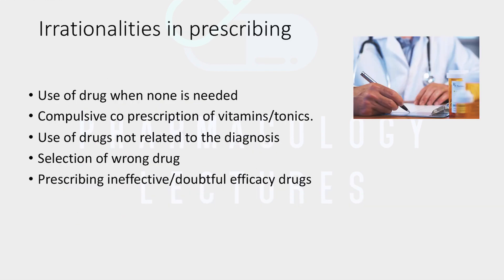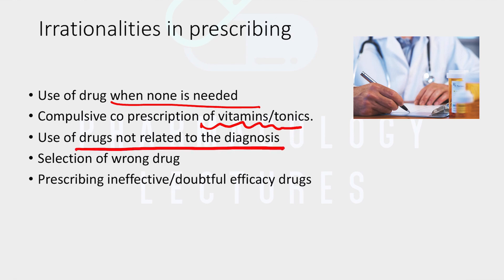Now, what are the irrationalities in prescriptions? Sometimes doctors prescribe drugs which are not actually needed — for example, vitamins and tonics that are not needed in patients. That is irrational prescribing. Another example is use of drugs not related to the diagnosis: in viral infections, patients are treated with antibiotic drugs. It is a viral infection but you are prescribing antibacterial — that is irrational prescribing.